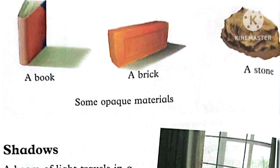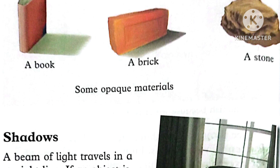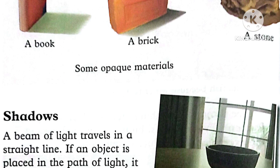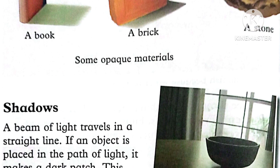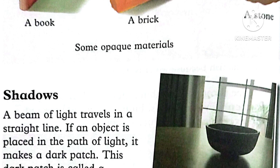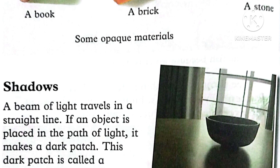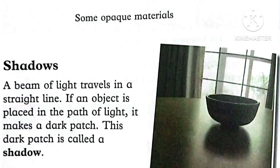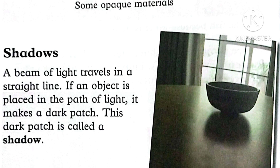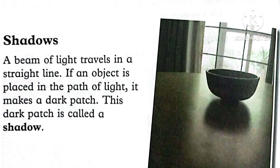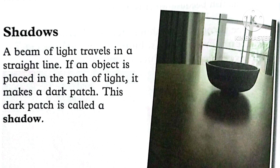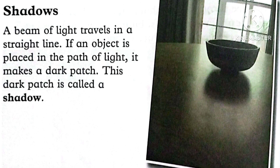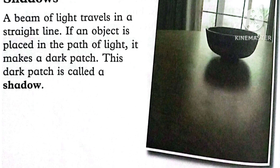The next topic is shadows. A beam of light travels in a straight line. If an object is placed in the path of light, it makes a dark patch. This dark patch is called a shadow.